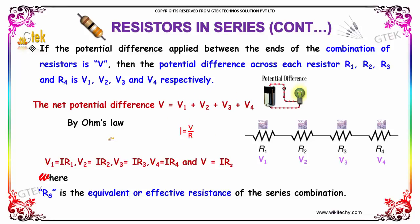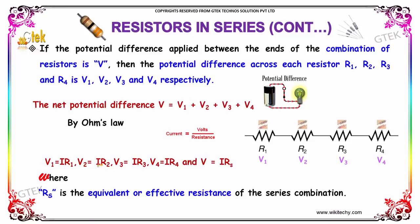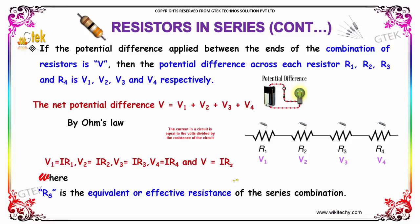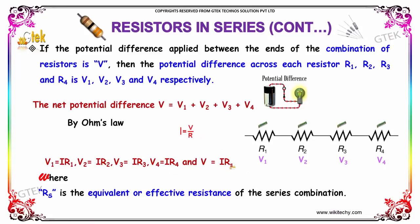So by Ohm's law, we will be getting V1 is equal to I into R1, V2 is equal to I into R2, V3 is equal to I into R3, and V4 is equal to I into R4. So on a whole, V is equal to I into the resistance in series.